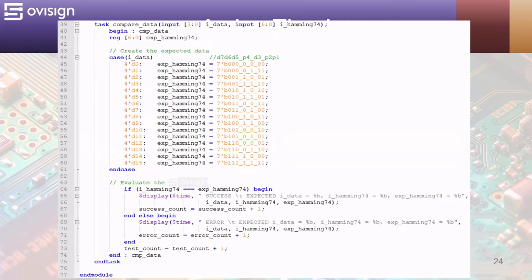Here we have the compare data task that has two inputs. One for the IDATA which is the input of the Hamming circuit. And the other for the value of the calculated Hamming code which is connected to the output of the Hamming encoder. At line 41 we declare a local variable that will create the expected data based on the input of the encoder. The codes are taken from the tables that were earlier presented and have 16 codes out of 128 possible values.